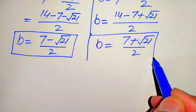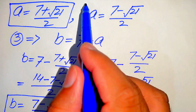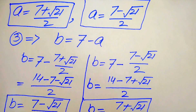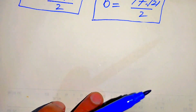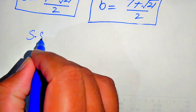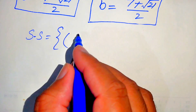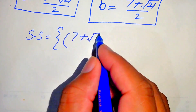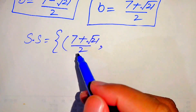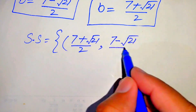Finally, there are two solutions. The first solution is A equals (7 plus square root of 21) over 2 with corresponding B equals (7 minus square root of 21) over 2. The second solution is A equals (7 minus square root of 21) over 2 with corresponding B equals (7 plus square root of 21) over 2.